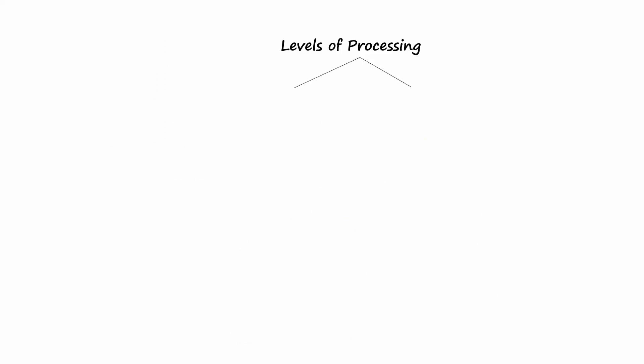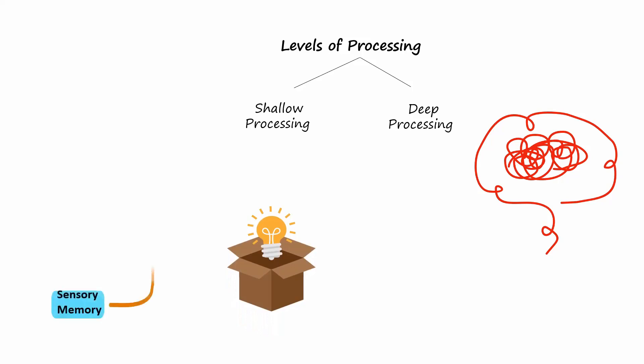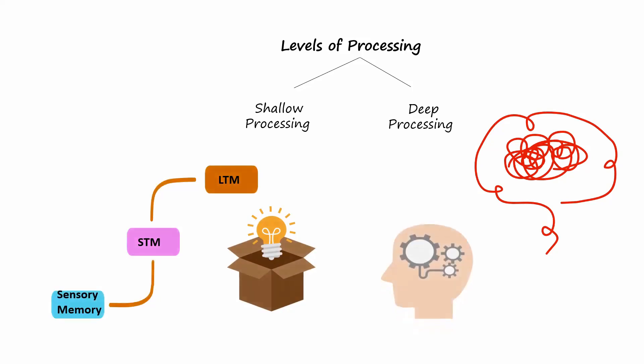In summary, Craig and Lockhart's Levels of Processing model provides an understanding of how we process information, highlighting the importance of depth in processing for better retention and recall. This perspective shifts our focus from the structure of memory storage — sensory memory, short-term memory, and long-term memory — to the nature of information processing itself.